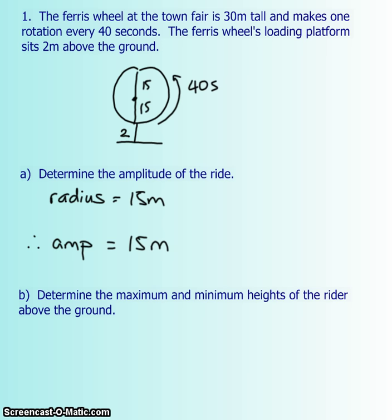Part b, determine the max and min heights of the rider above the ground. So it looks like the maximum, if they were all the way up here, they're going to be 2, and then the 15, and then another 15 meters off the ground. So 15, 15, and then that additional 2, which is 32 meters off the ground. Your minimum when you're in the car, though, is going to be 2 meters off the ground.